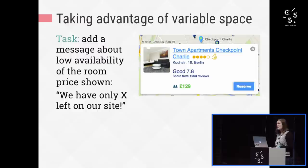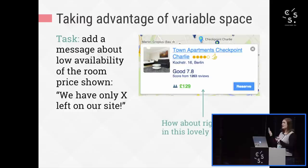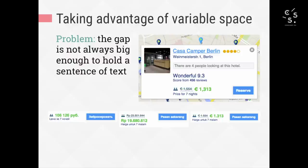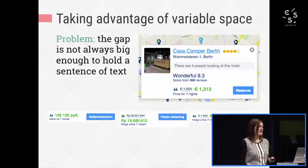Another place on Booking.com where we changed the layout without a media query is within the map info windows that show when you click on a marker. I had the task to add a message about the room price being almost sold out. The logical place to put it seemed to be next to the price, especially since there's often a big gap there. But the problem is that there is not always a big gap there — rack rate pricing, long languages, and long currencies can all take up a lot of space. This issue applies in responsive web design as well, where the width available varies as the viewport changes size.